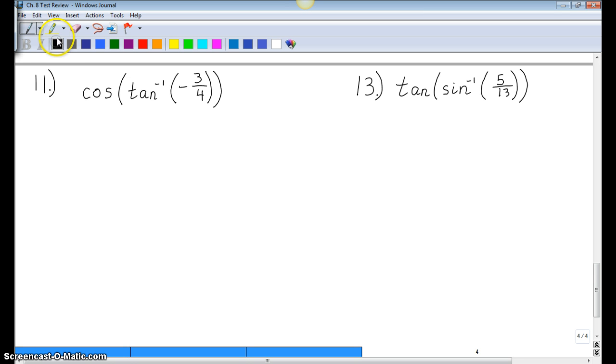So let me just start example 11. The way you start by looking at the middle, looking at tan inverse of negative 3 fourths. Again, we start by saying tangent inverse restricts us to quadrants 1 and 4. Once we know that we're in quadrants 1 and 4, we can narrow it all the way down to quadrant 4 because we have negative 3 fourths.